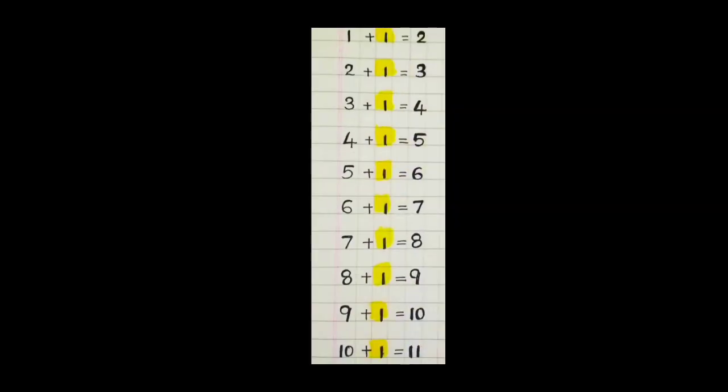Step three. All the smart children who will learn this table by heart through step one and step two, say with me. One plus one, two. Two plus one, three. Three plus one, four. Four plus one, five. Five plus one, six. Six plus one, seven. Seven plus one, eight. Eight plus one, nine. Nine plus one, ten. Ten plus one, eleven.